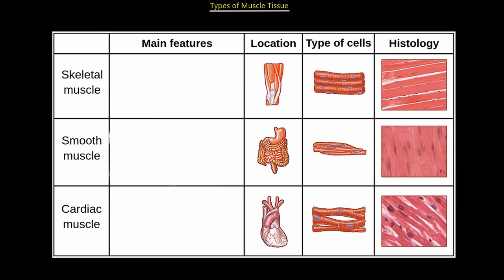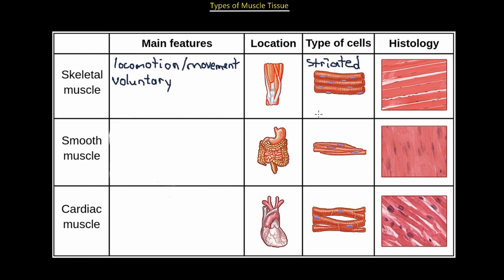Skeletal muscle is our typical muscle that we would assume would be on the arm or leg. Its function is locomotion — movement of limbs and body parts — and it is completely voluntary, meaning we can control everything consciously. The structure of skeletal muscle is that it is striated, meaning it has these little lines that are all parallel.